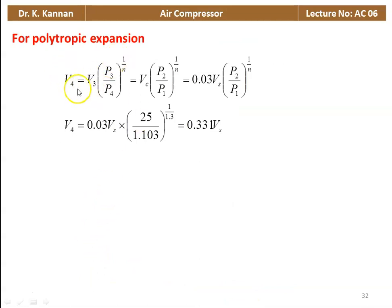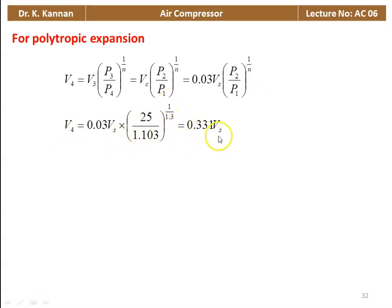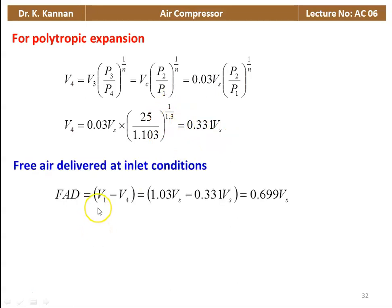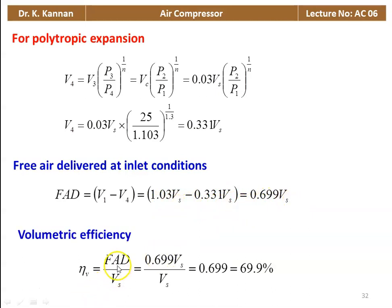Cylinder dimensions: V1 equal to pi by 4 D squared into L into N. With L equal to 1.2 D and N equal to 1000 rpm, solving gives D equal to 6.42 cm, and L equal to 1.2 into 6.42 equals 7.7 cm. For polytropic expansion: V4 equal to Vc into (P2 by P1) to the power 1 by n, substituting 0.03 Vs into (25 by 1.103) to the power 1 by 1.3 equals 0.331 Vs. FAD equals V1 minus V4 equals 1.03 Vs minus 0.331 Vs equals 0.699 Vs. Volumetric efficiency equals 0.699, which is 69.9%.